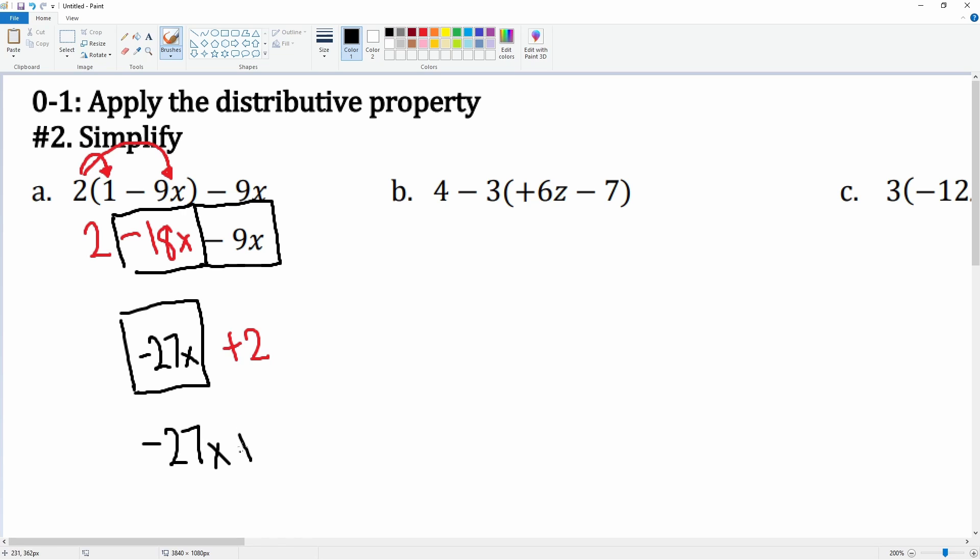Let's look at b. We have 4 minus 3 parentheses 6z minus 7.